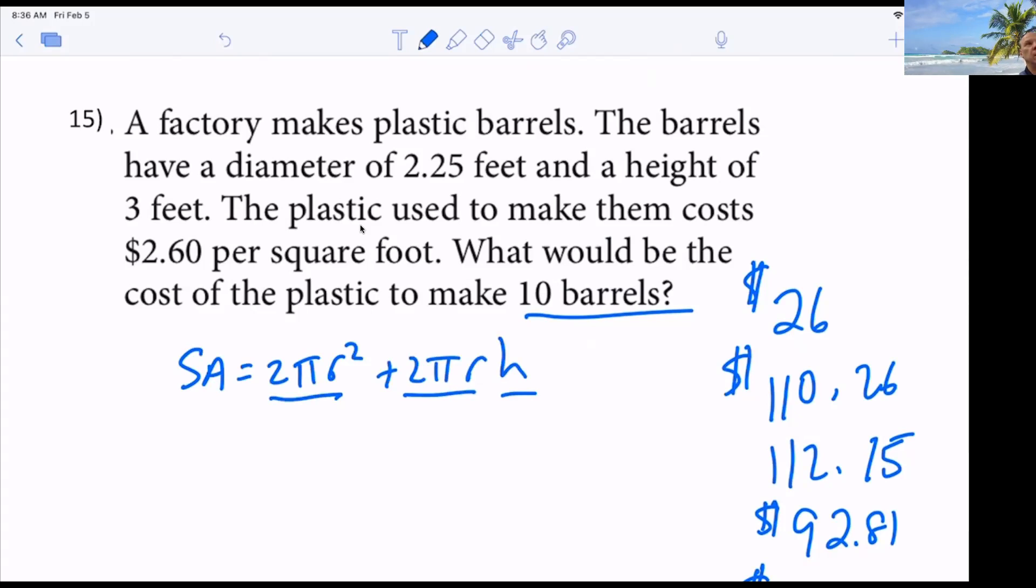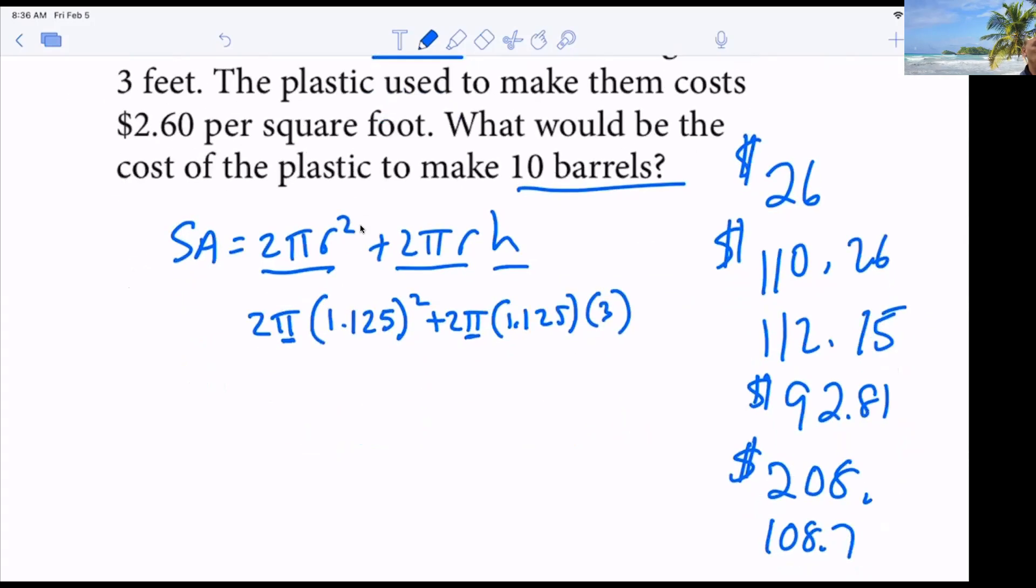Because I want you to amaze your teachers next year when you rattle off all the formulas. Everybody else is standing around going, what? Again, simple. The diameter is 2.25. So that means 2 pi. The radius would be 1.125 squared plus 2 pi times 1.125 times the height, which is 3. Now, do me a favor. Do you agree there's pi's in both of these answers? Everybody agree with that? Yeah. So you can just multiply it out, but leave the pi out. So do 2 times 1.125 squared plus 2 times 1.25 times 3. Somebody tell me what that is.